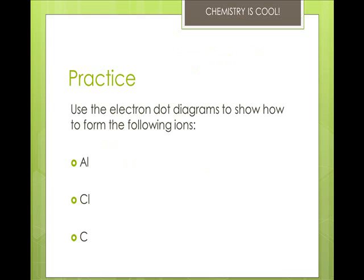So use the electron diagrams to show how to form the following ions: aluminum, chlorine, and carbon.